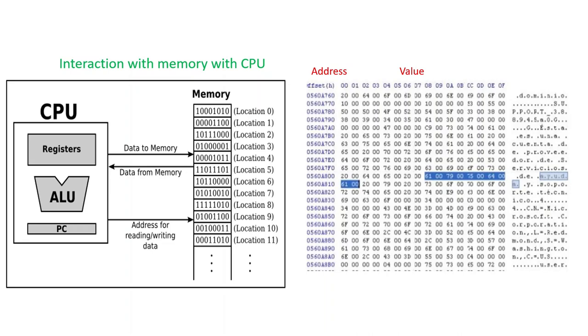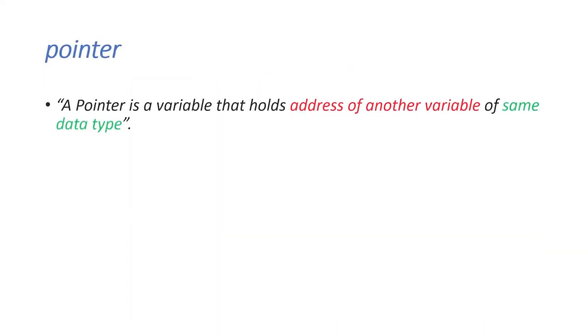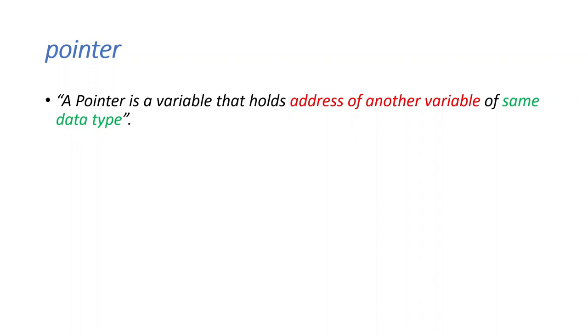Now let us look at the definition of a pointer. A pointer is a variable that holds the address of another variable of the same data type. For example, when we declare a variable i equals 3, a memory location is allocated in the main memory referred with an address.